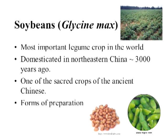Soybeans are the most important legume crop in the world. They were domesticated in northeastern China some 3,000 years ago and were one of the sacred crops of the ancient Chinese. Just like rice, corn, and wheat, soybeans have been developed and prepared in all different kinds of forms that vary across cultures — soy milk, tofu, tempeh, eating them raw, or eating the seeds as edamame as you'll often find in health food stores today.